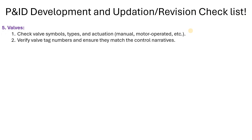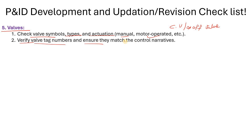Now, valves — this part is very important to consider. Please check the valve symbol, the type of valve, and the actuation — whether you are using a manual valve, motor-operated valve, control valve, or on/off valve. You must check that. Then verify your valve tag number and ensure they match the control narratives.